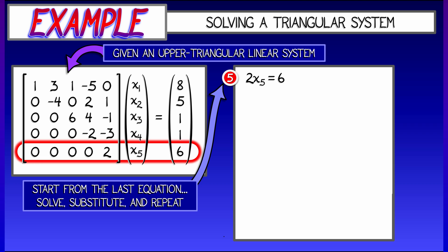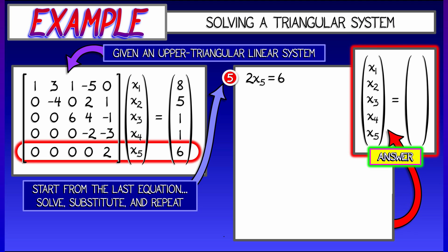It's 2 times X5 equals 6. That equation just has one unknown. So we can solve it for X5, clearly. X5 is equal to 3, and that's great.